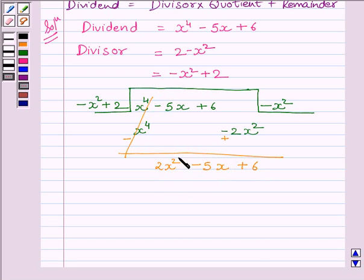Now, our first term is 2x squared, so we will multiply the divisor with minus 2 to get the first term as 2x squared. Multiplying divisor with minus 2, we get 2x squared minus 4.